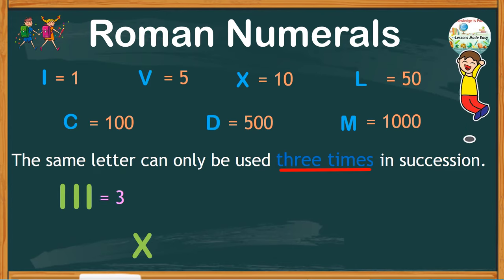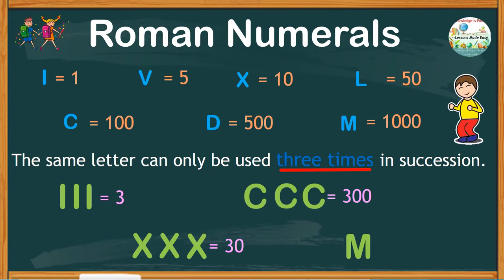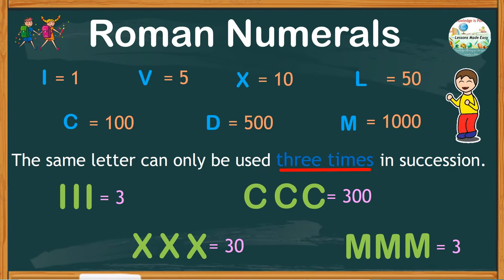X is 10, so you can use it three times to show 30. C is for 100, you can use it three times to show 300. And M for 1000, which means you can express 3000 by using it three times in a row.